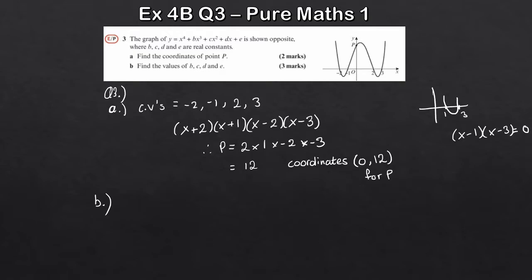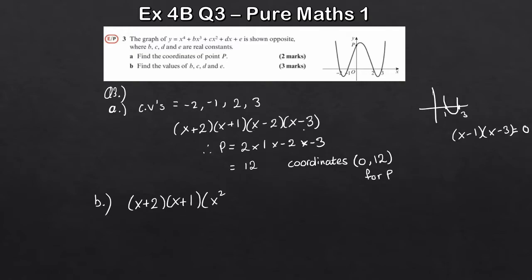For part b, we need to expand those four factors to get the quartic and identify b, c, d and e. It's long-winded but shouldn't be too challenging — just take your time and be careful multiplying out. I'll multiply the last two factors first: (x−2)(x−3) gives x²−5x+6, which removes some of the minus signs early on.